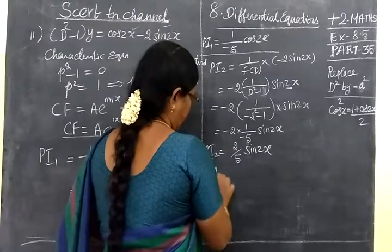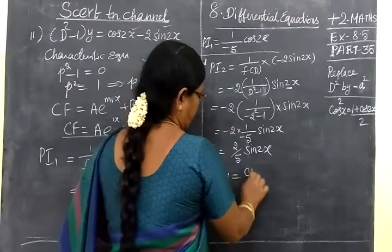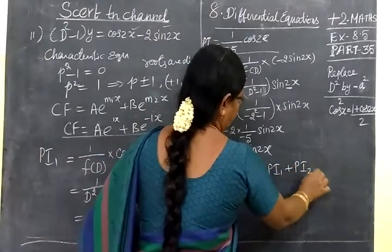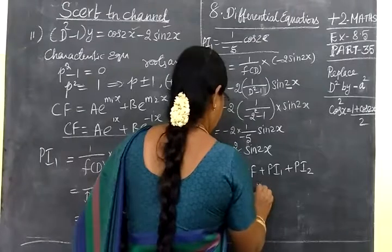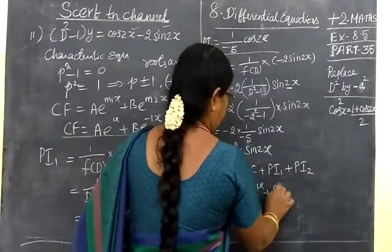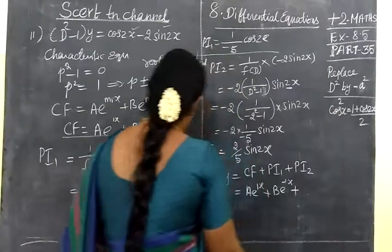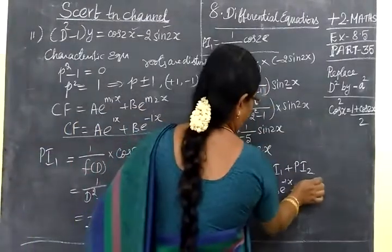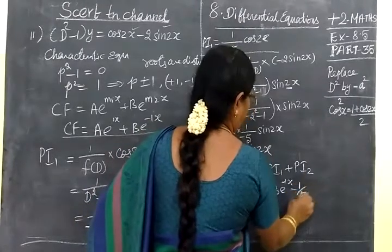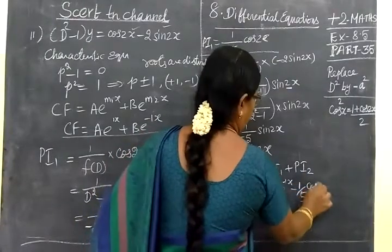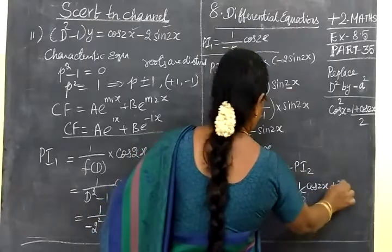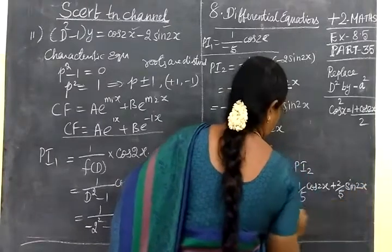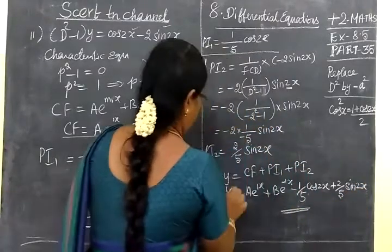Now the general solution: y = CF + PI1 + PI2 = Ae^x + Be^(-x) - 1/5 × cos2x + 2/5 × sin2x. This is the solution.